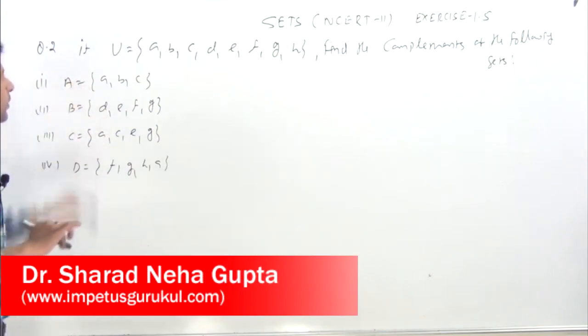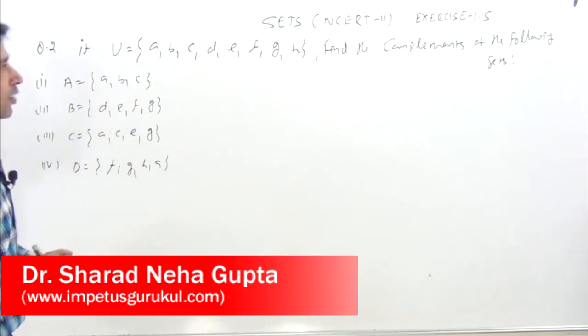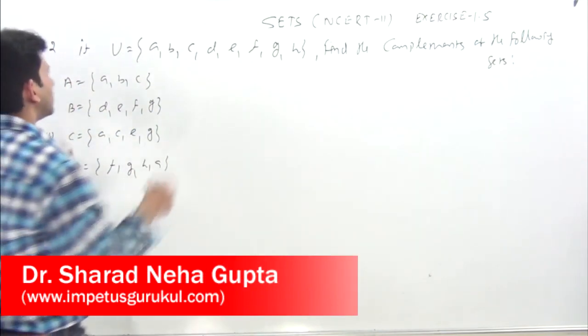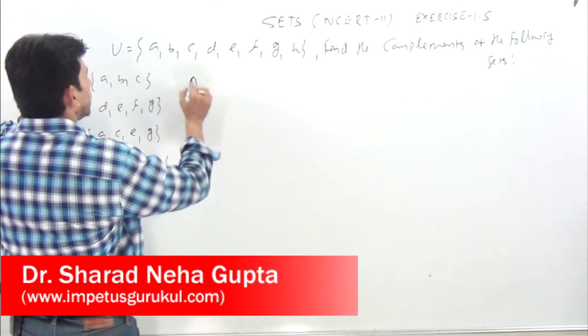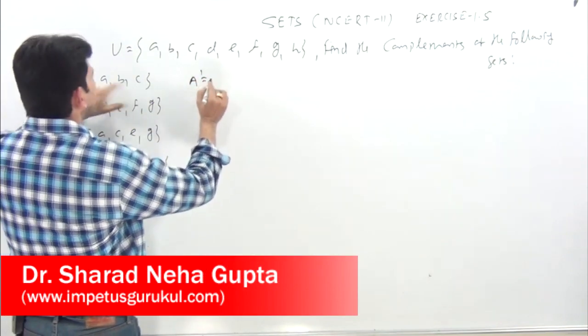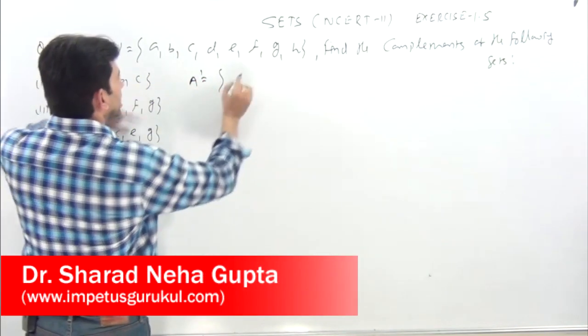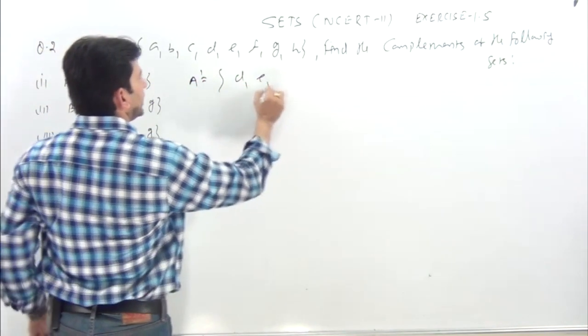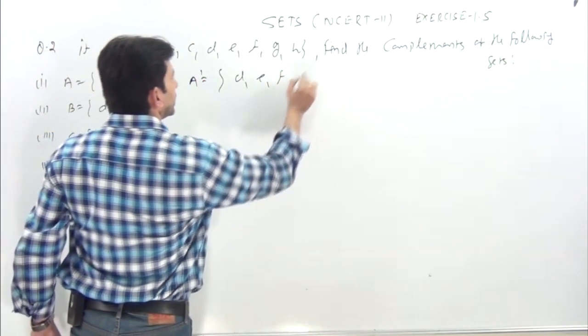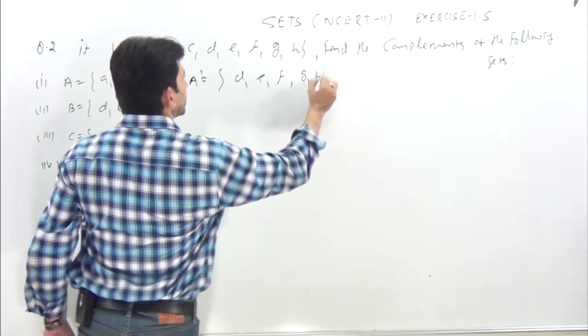Universal set here is A to H. Now the complement: A dash — we leave A, B, C, so A complement = {D, E, F, G, H}. B complement: leave D, E, F, G — so B complement = {A, B, C, H}.